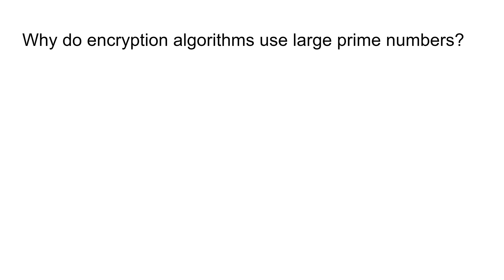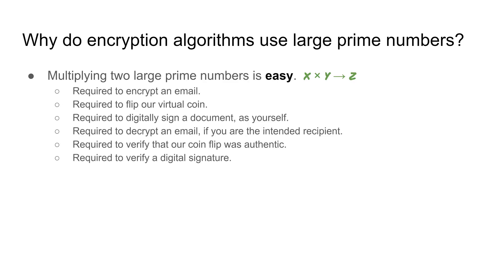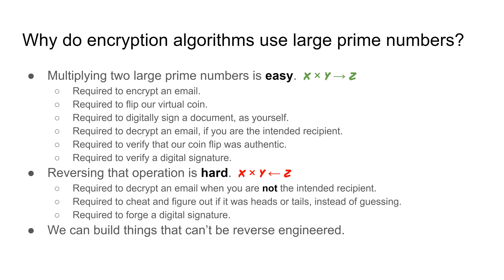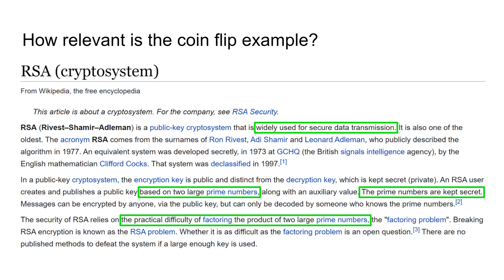Why do encryption algorithms use large prime numbers? Multiplying two large prime numbers is easy — that's required to flip the coin or to encrypt the email. But reversing that operation is hard, so you can't cheat at the coin flip game and you can't break good encryption. We only discussed one facet of encryption, but it's an important one: we use large prime numbers so we can build things that can't be reverse engineered.